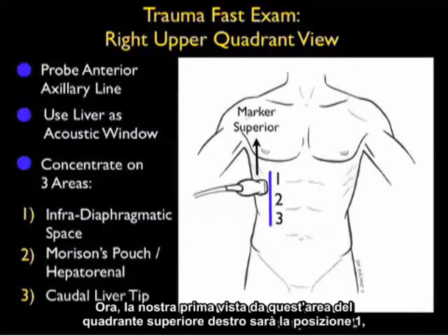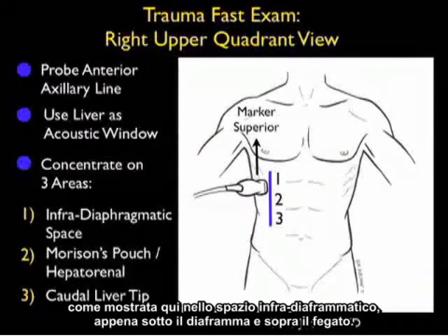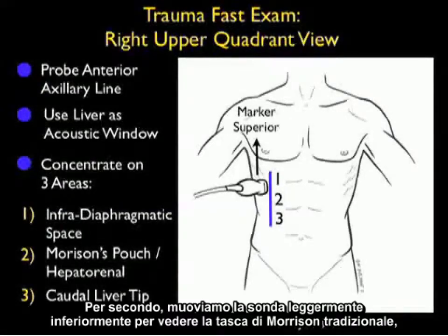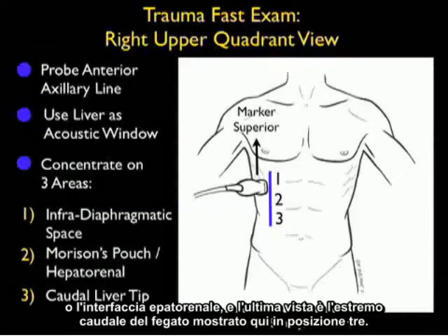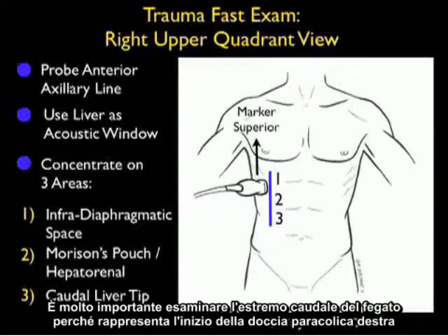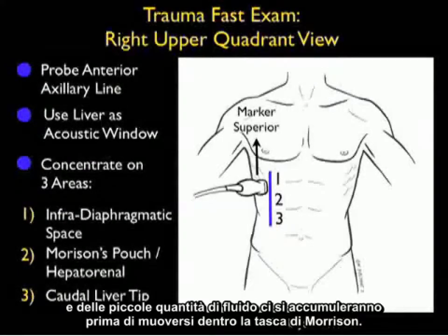Our first view from this right upper quadrant area will be position one, in the infra-diaphragmatic space, just below the diaphragm and above the liver. Second, we'll move the probe slightly inferiorly to look into the traditional Morrison's pouch, or hepatorenal interface, and the last view is the caudal tip of the liver, shown here in position three. It's very important to look at the caudal tip of the liver, as this represents the beginning of the right pericolic gutter, and small amounts of fluid will pool here before moving into Morrison's pouch.